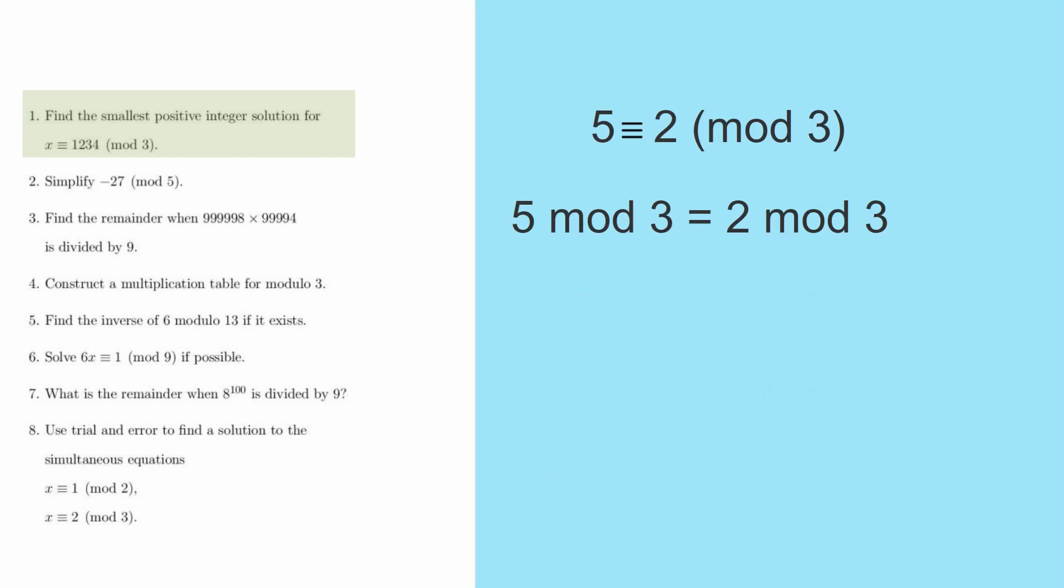In terms of notation, I've put here two styles of notation that I think will be acceptable to any examiner. So the first is that we would say that 5 is equivalent to 2, bracket, Mod 3, close bracket. You can see here I've used the 3 lined equivalent sign rather than equals. Or the other way that you can do it is you can say 5 Mod 3, without any brackets, is equal to 2 Mod 3.